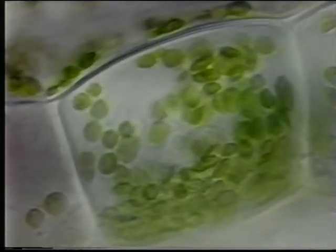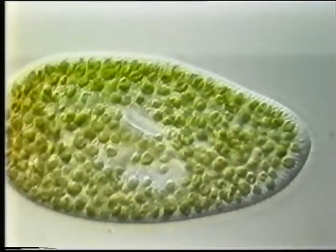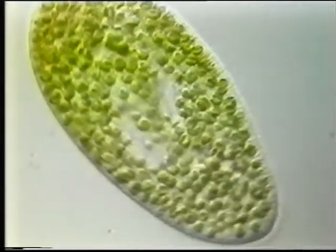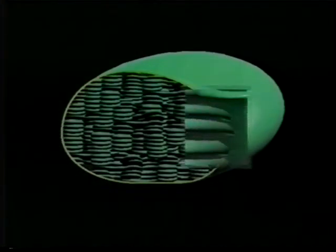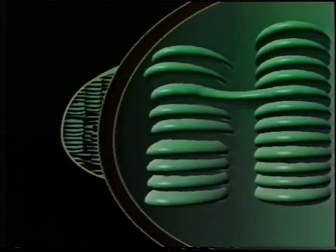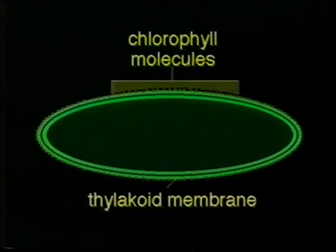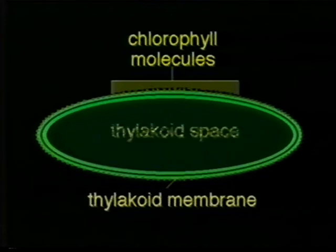Chloroplasts have DNA and reproduce themselves, supporting the theory that they were once independently living organisms, similar to the symbiotic algae cells living within a paramecium. A section through a chloroplast shows that it is composed of an outer membrane, an inner membrane, and stacks of thylakoid discs called grana. The surface of the thylakoid membrane is covered with chlorophyll molecules. Within each thylakoid is a hollow called the thylakoid space.